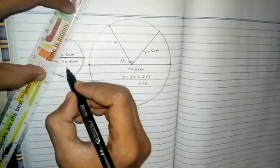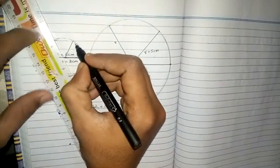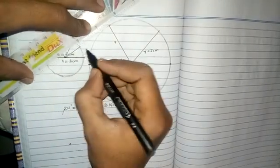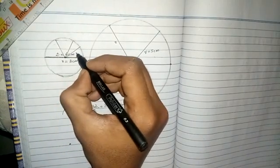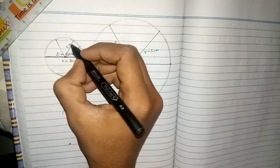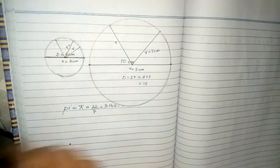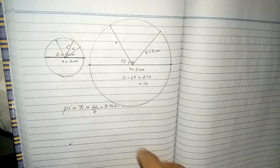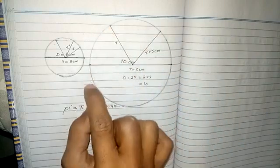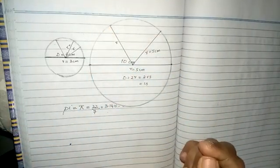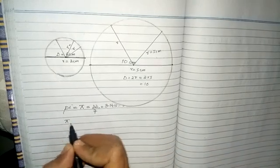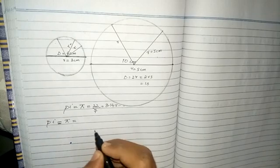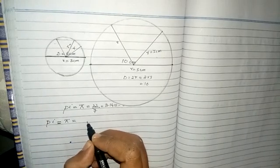Similarly here, if we connect any point from the circumference to the center of the circle, that distance — the radius — will be constant. The radius of the circle will always be the same. So in a circle there is a circumference and there is a diameter. Pi was derived as the ratio of the circumference of a circle to its diameter.